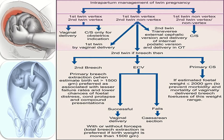In the first possibility, when both twins are in vertex position, we preferably go for vaginal delivery, with cesarean section only for obstetric indications. In the second case, when the first twin is vertex and the second is non-vertex, the first twin is delivered vaginally. If the second twin is in breech, we will discuss that case. If the second twin is in transverse position, we do external cephalic version, or internal podalic version and delivery in the operation theater — meaning we perform either ECV or IPV in OT.